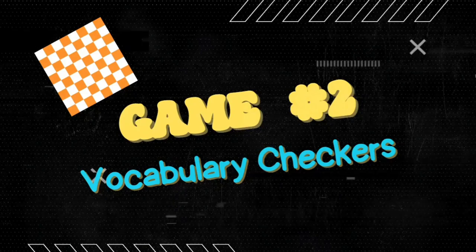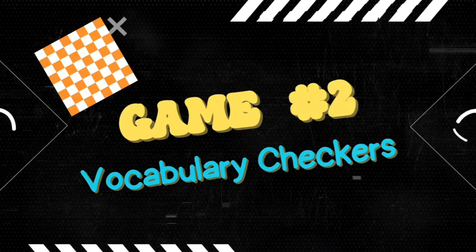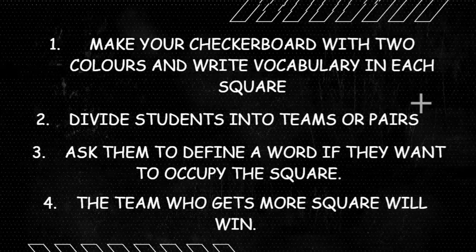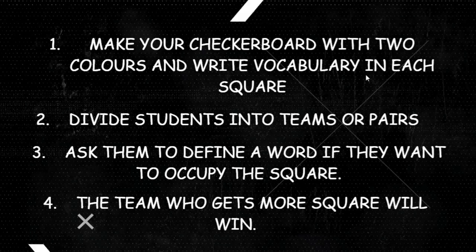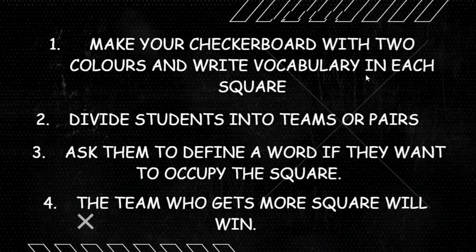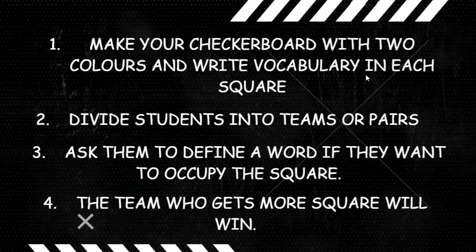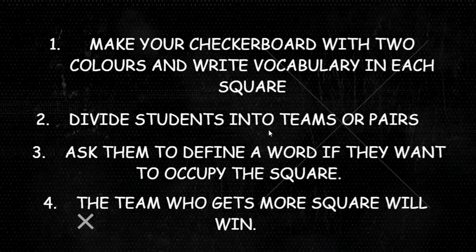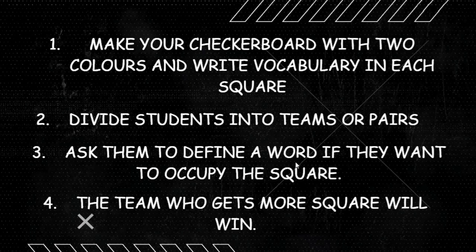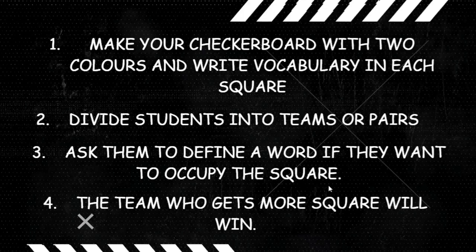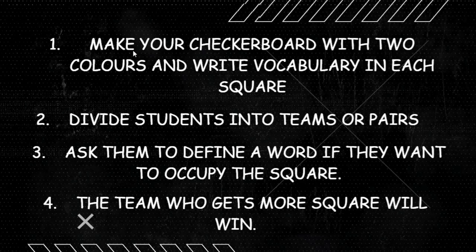Game number two: Vocabulary Checkers. You all know what checkers is. To play vocabulary checkers: first, make your checker board with two colors and write vocabulary in each square — you can find a PDF in the description box to print it. Second, divide students into teams or pairs. Third, ask them to define a word if they want to occupy a square — this is how they score points and the game begins.